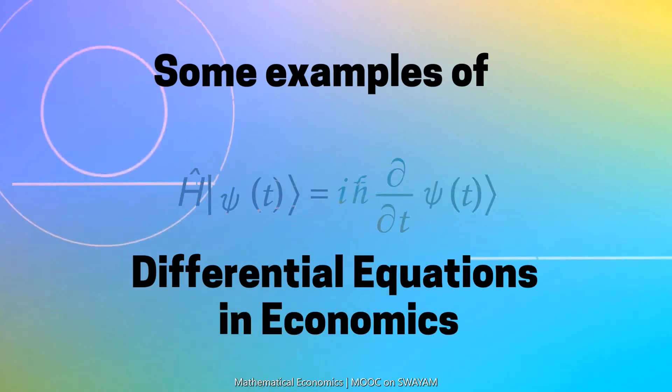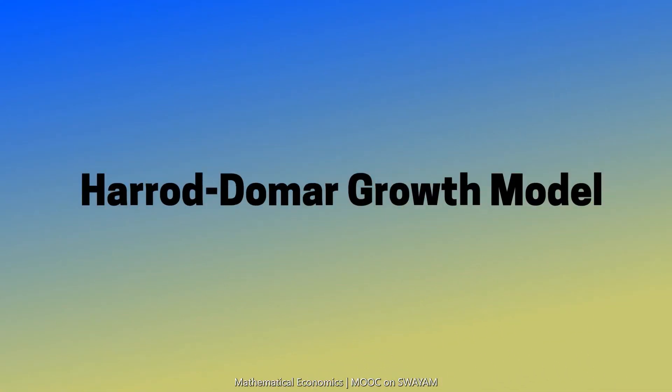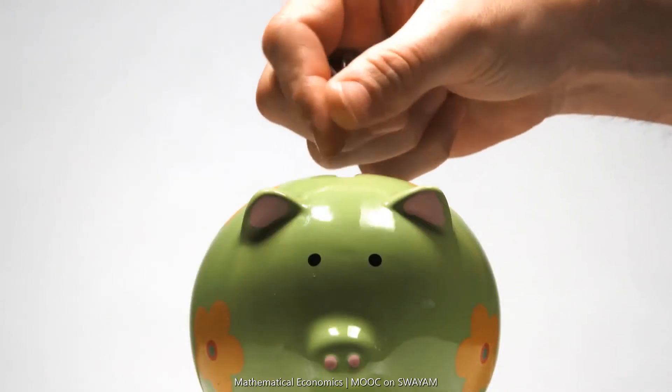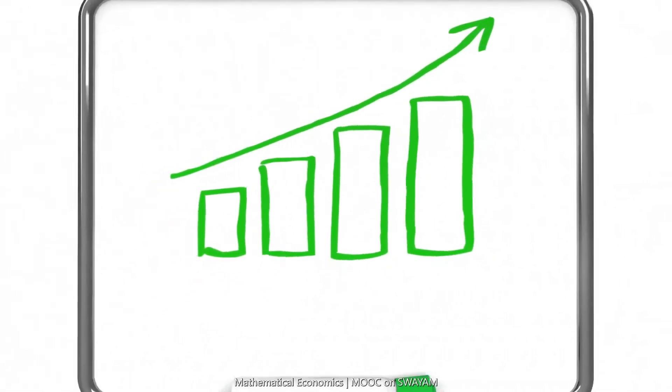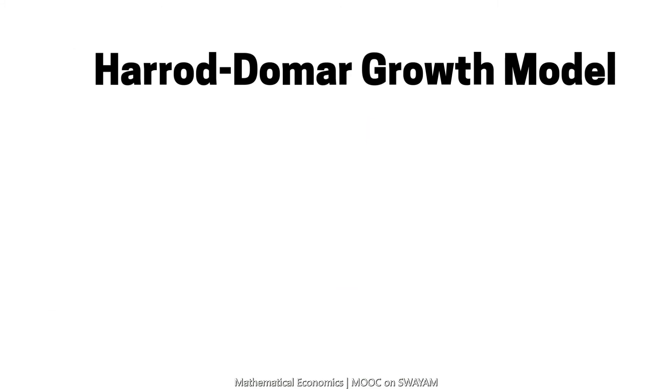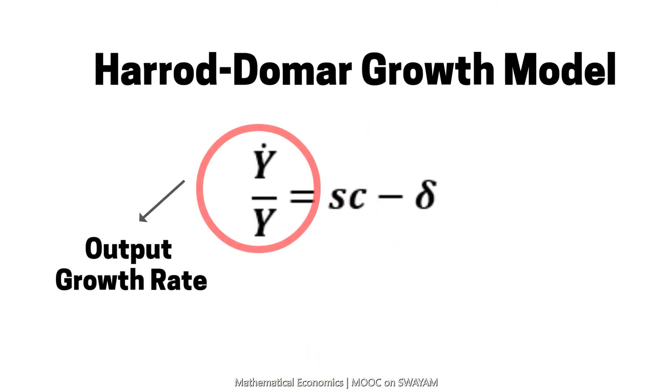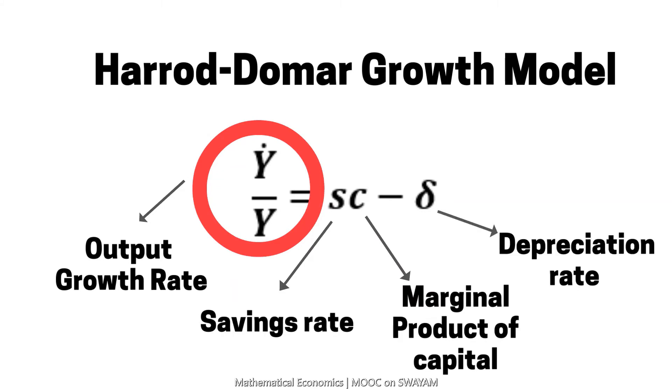You must have heard about the Harrod-Domar growth model. This model explains an economy's growth rate in terms of levels of savings and productivity of capital. This is the Harrod-Domar growth model: Ẏ/Y is output growth rate, S is savings rate, C is marginal product of capital, and δ is depreciation rate.